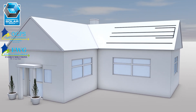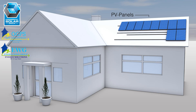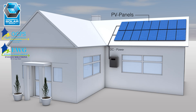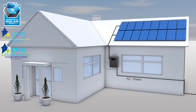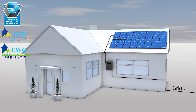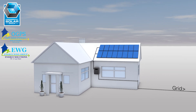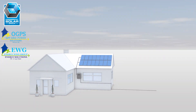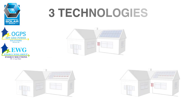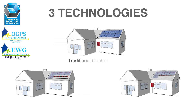A photovoltaic system consists of solar panels, which produce DC direct current power when exposed to sunlight, and an inverter which inverts the DC power into AC power that is fed into the utility grid or a battery storage system. Three different inverter technologies are currently used in solar systems: traditional central inverter, microinverters, and DC optimizers.